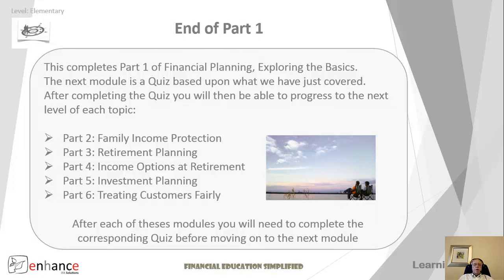We've come to the end of part one and the next module is a quiz based upon what we've just covered. After completing the quiz you'll be able to progress to the next level of each topic. Part two will be family income protection, part three more detail on retirement planning, part four your income options at retirement, part five investment planning, and then a section on what's happening in the industry and the regulatory environment — because this also has a massive effect on how you go about your planning and how you should seek advice. This is called treating customers fairly. After each of these modules you'll need to complete the corresponding quiz before moving on to the next module.